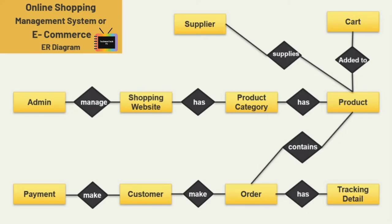These are the relationships defined across the ten entities. Now let's see the cardinality ratios. One admin can manage only one shopping or ecommerce website at a time. One shopping website has many product categories, and under one product category there are many products. One supplier supplies many products.